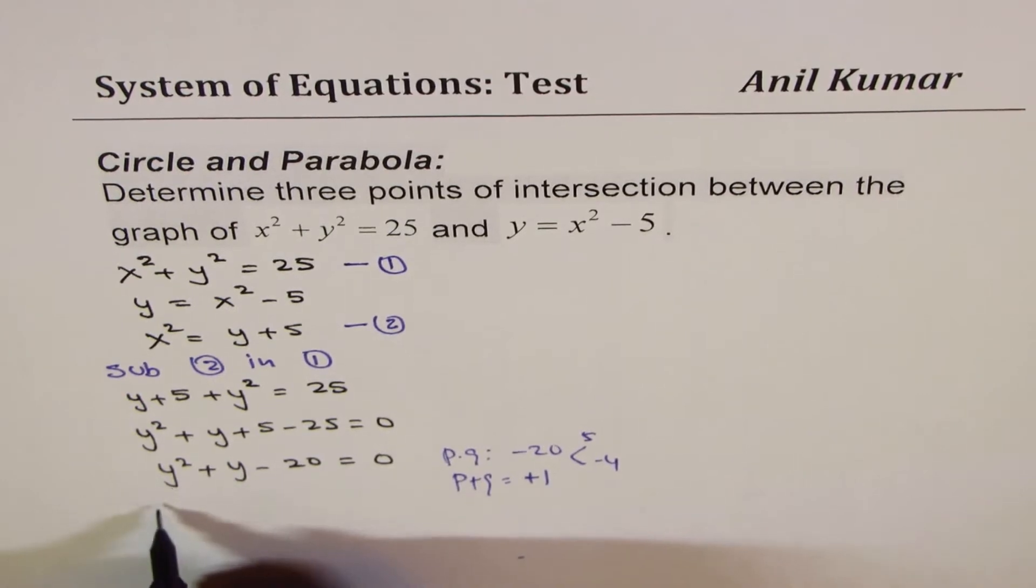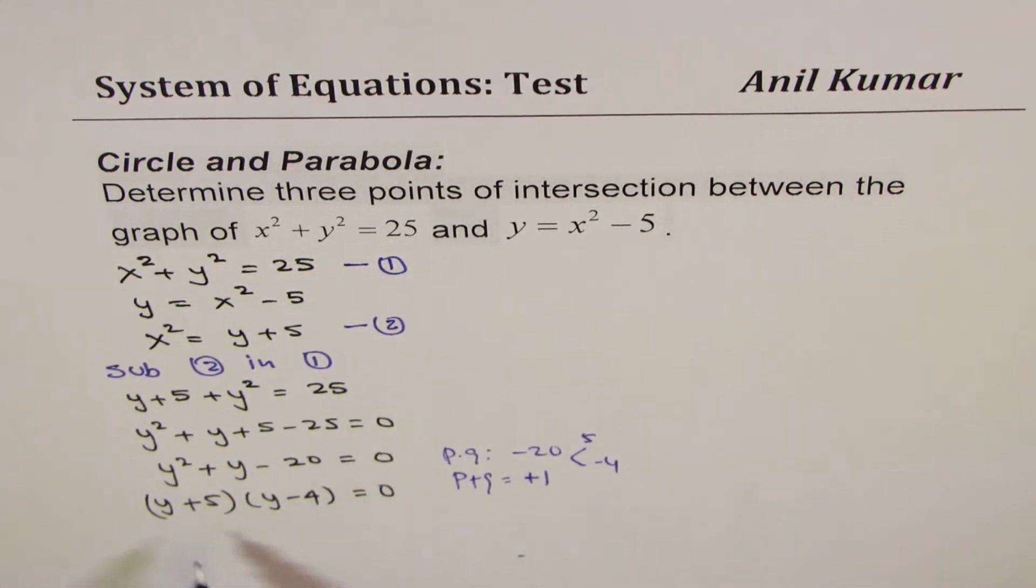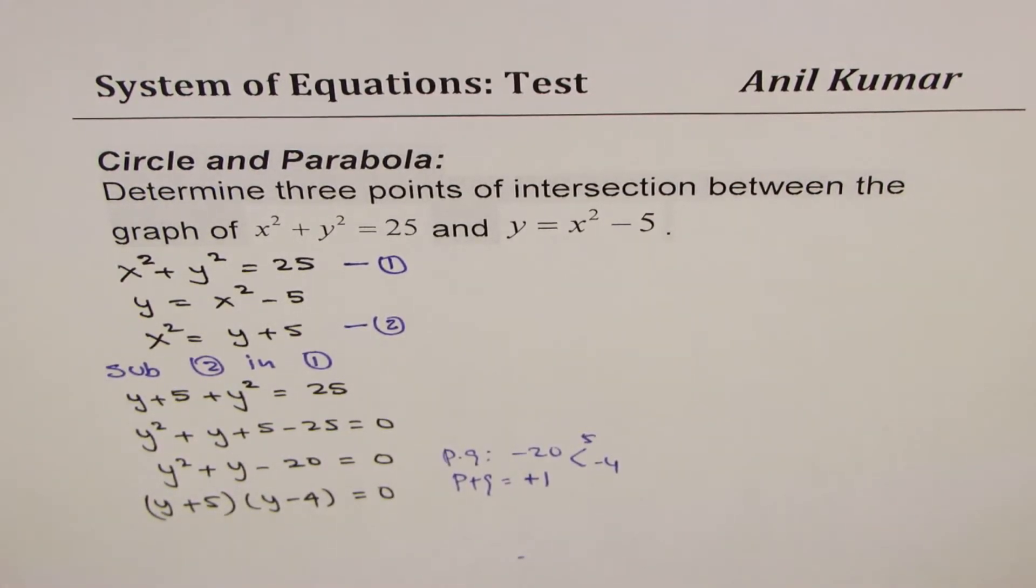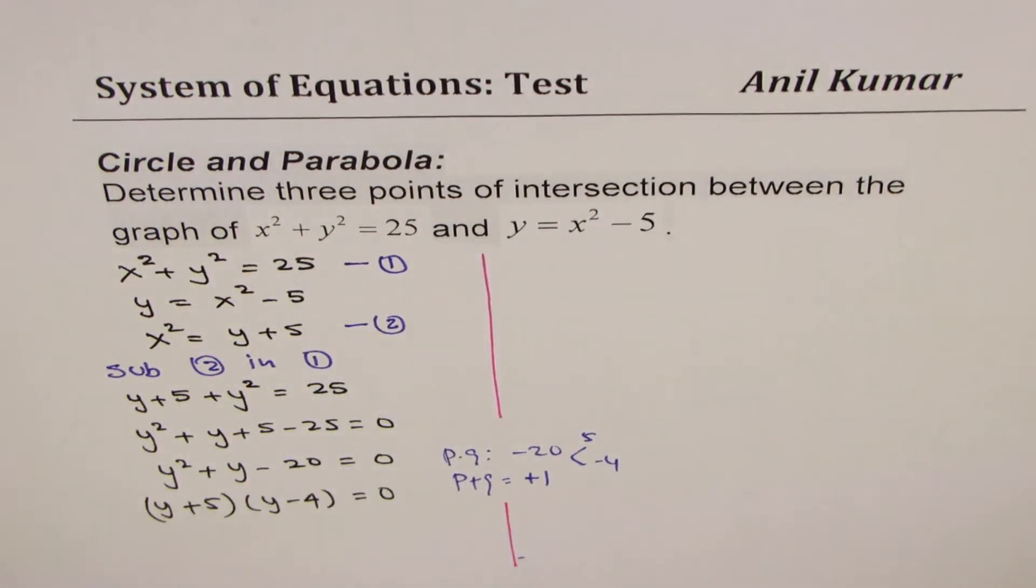So this can be factored as y plus 5 times y minus 4 equals 0. Now that gives us two points. Let's figure out what these two points are by equating each factor to 0.